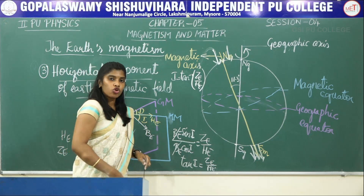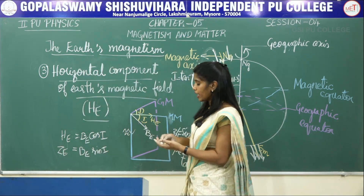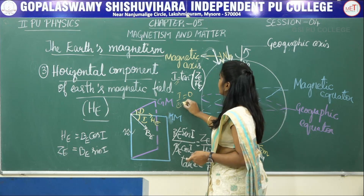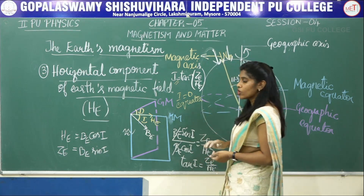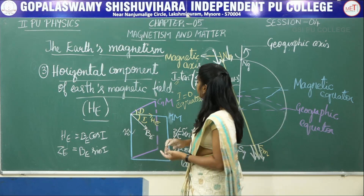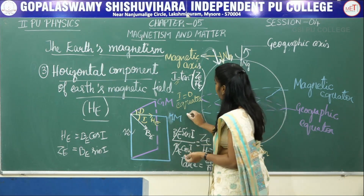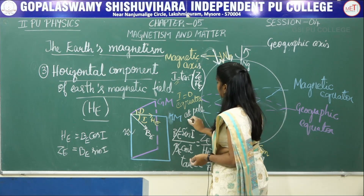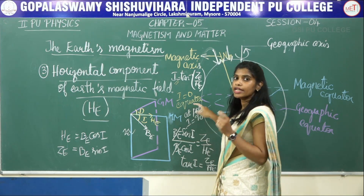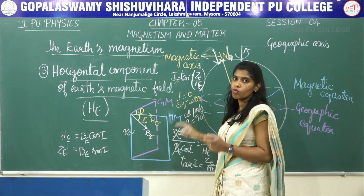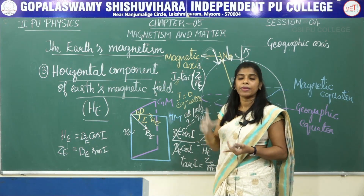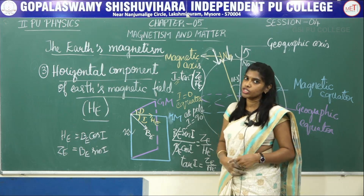A very important thing you should know: the inclination I is equal to 0 at the equator, and at the pole I is equal to 90 degrees. So inclination is 0 at the equator and 90 degrees at the pole. Remember these values — they are asked for 1 mark. The definitions of the elements like declination and inclination are also asked for 1 mark and are very important.